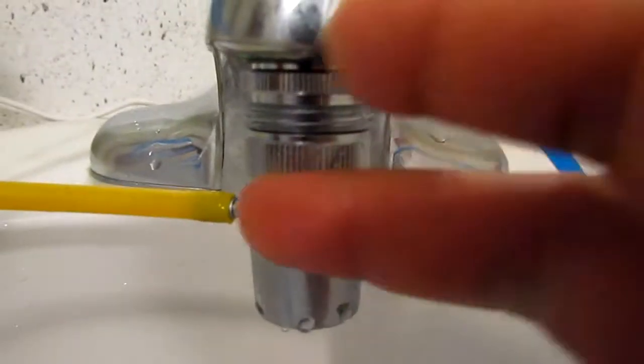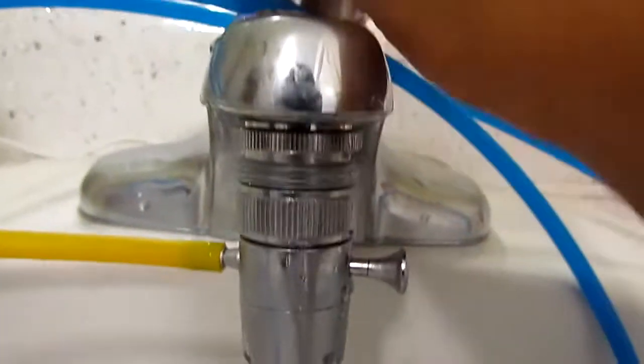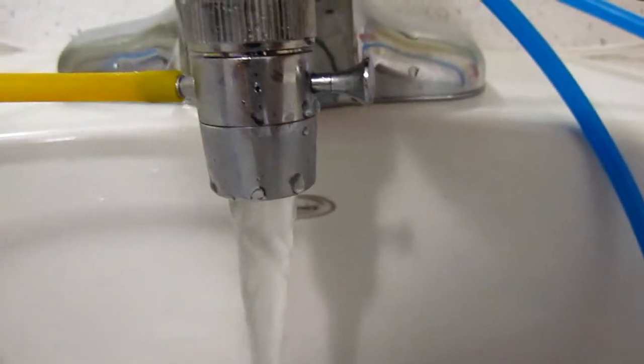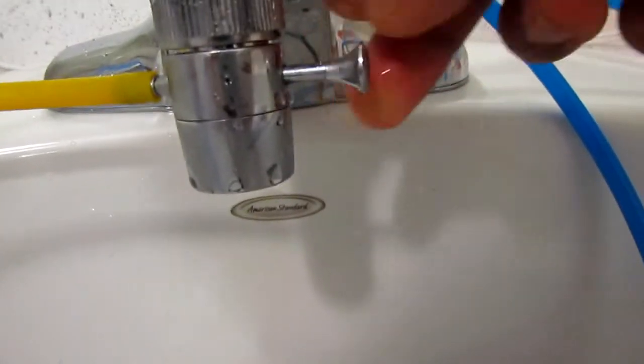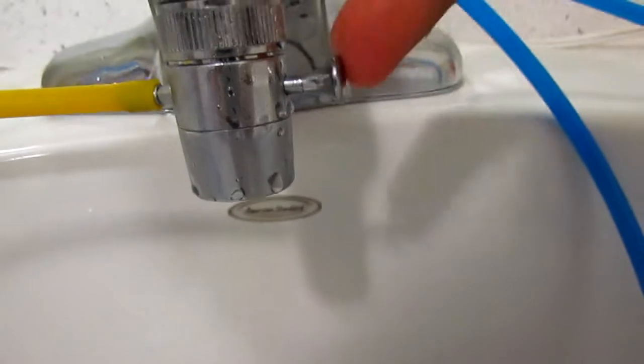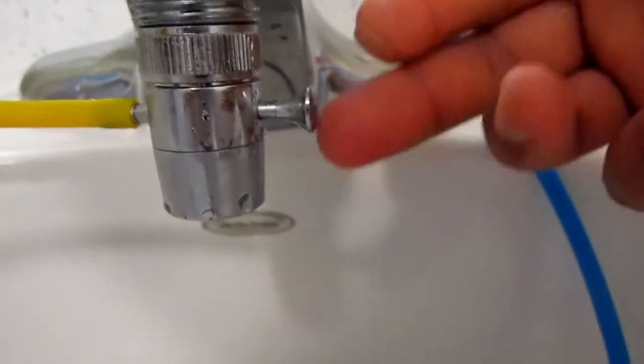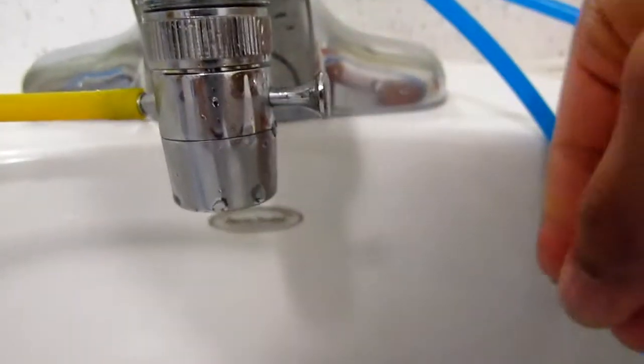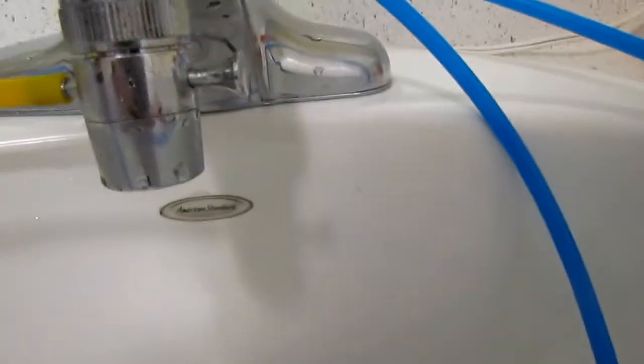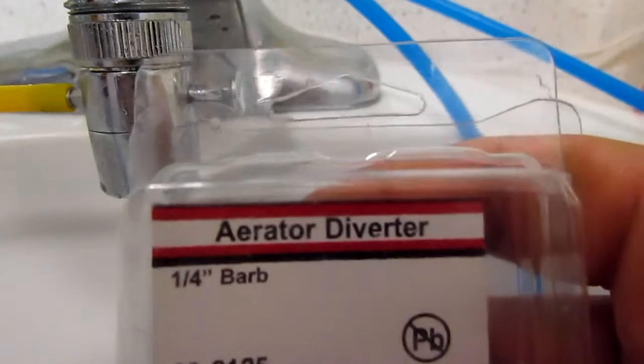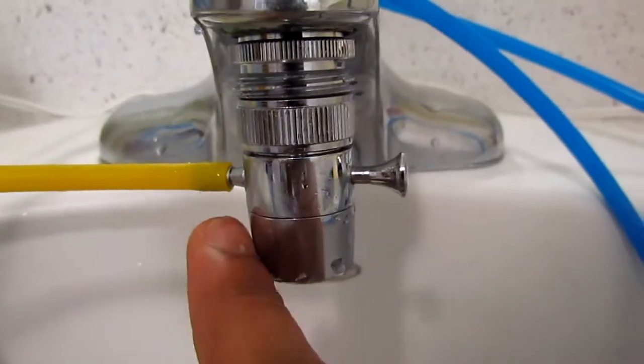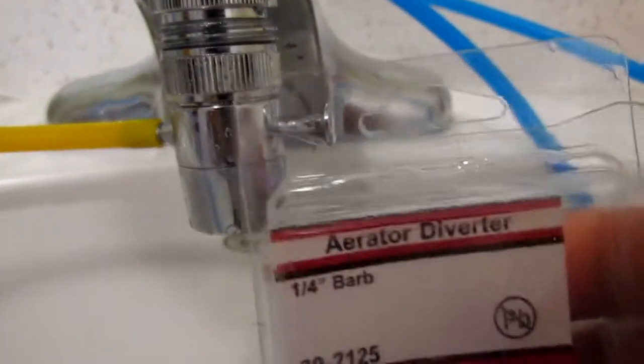And then after that you can see we got this little contraption thing going on here. If I pull this, it turns my RO on. So basically it goes like that and I pull it, RO turns on. When I turn it back off, the pressure drops and it snaps back in. That's called an aerated diverter. I got the quarter inch barb because I have quarter inch tubing and it basically goes straight into that barb right there.